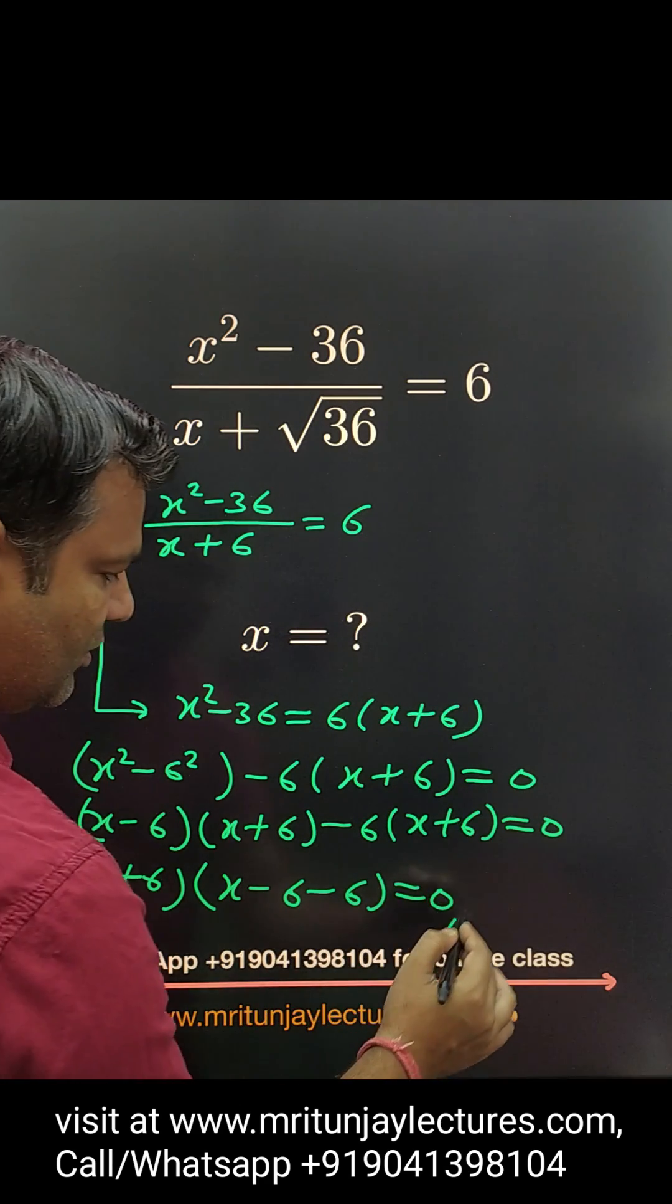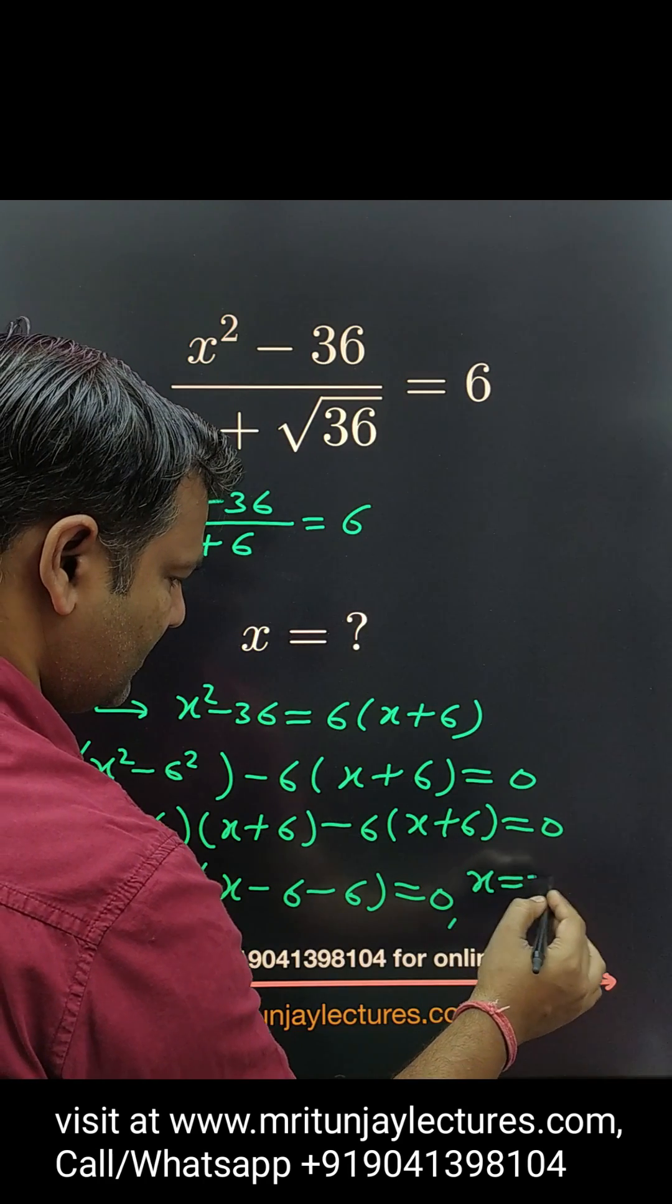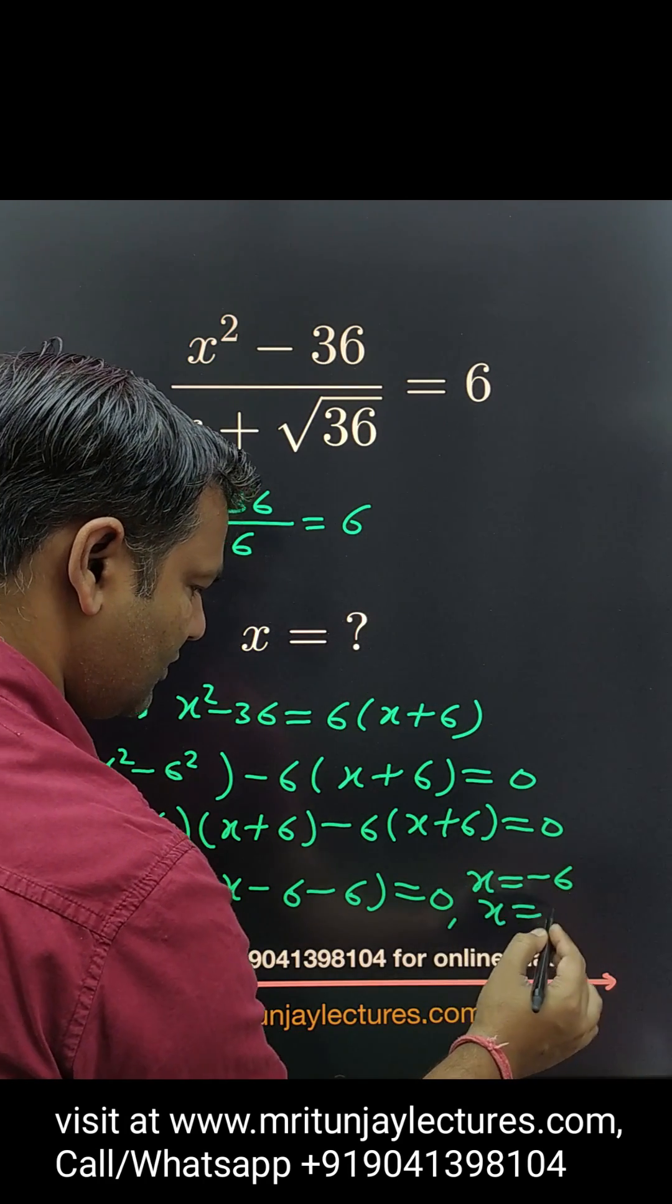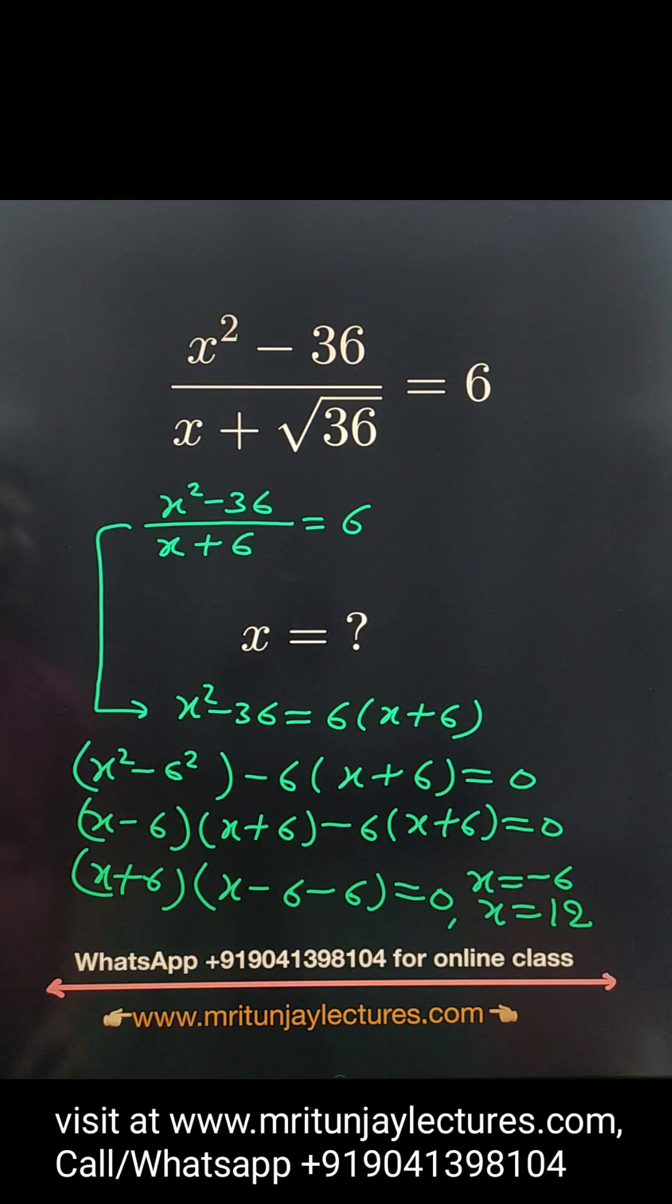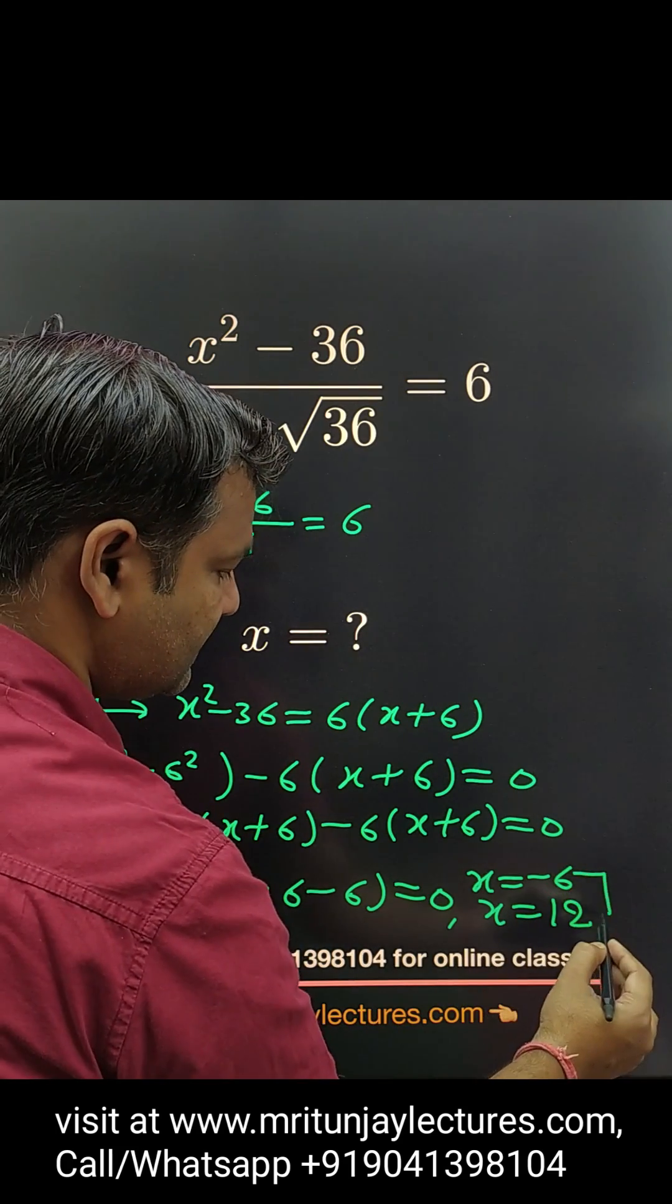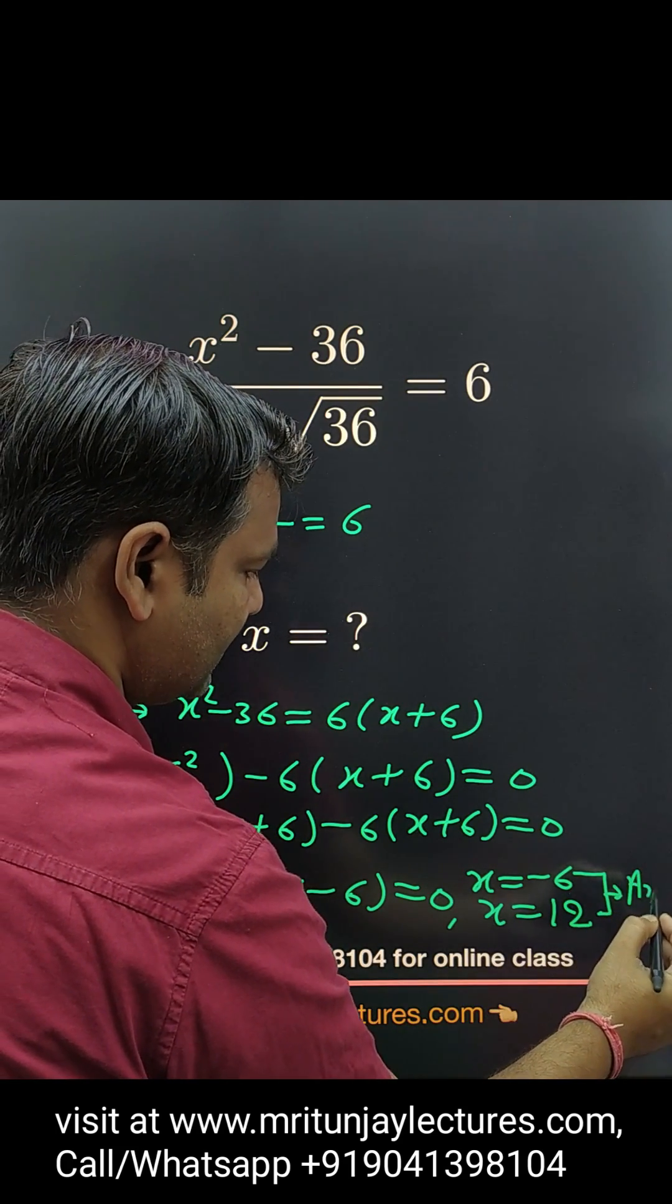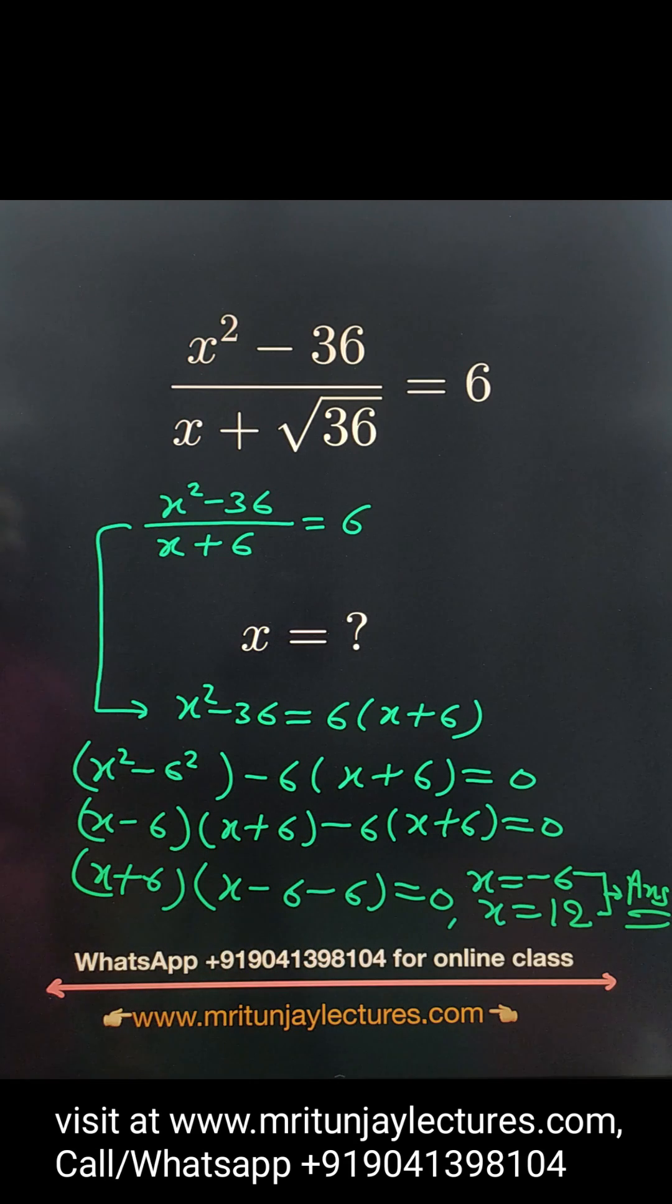Okay, so x equals how much? Minus 6, and x equals how much? 12. There are two values possible: x = -6 and x = 12.